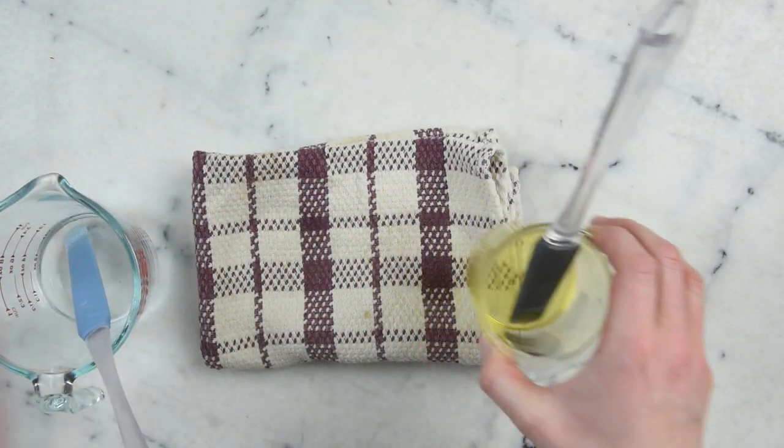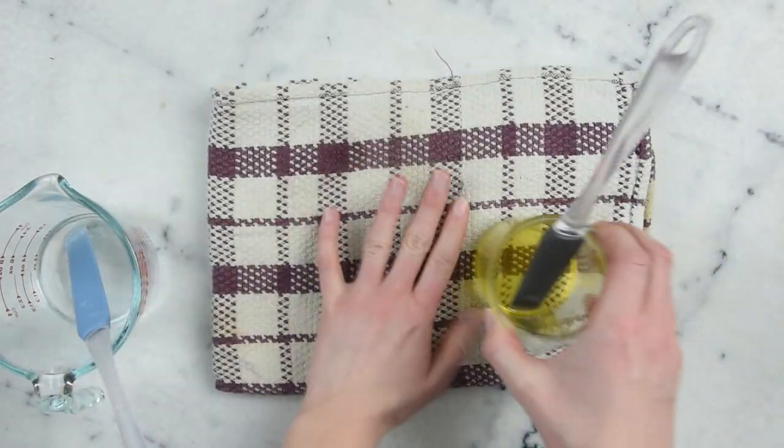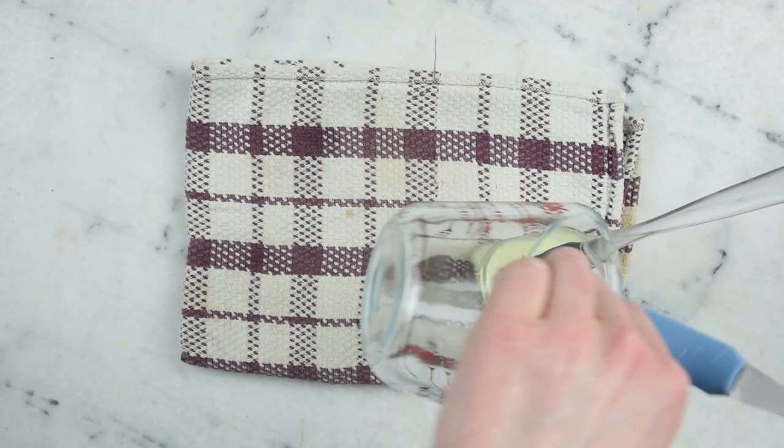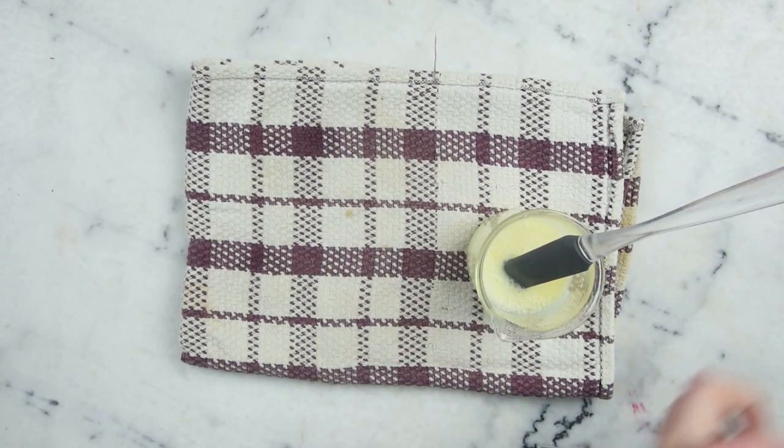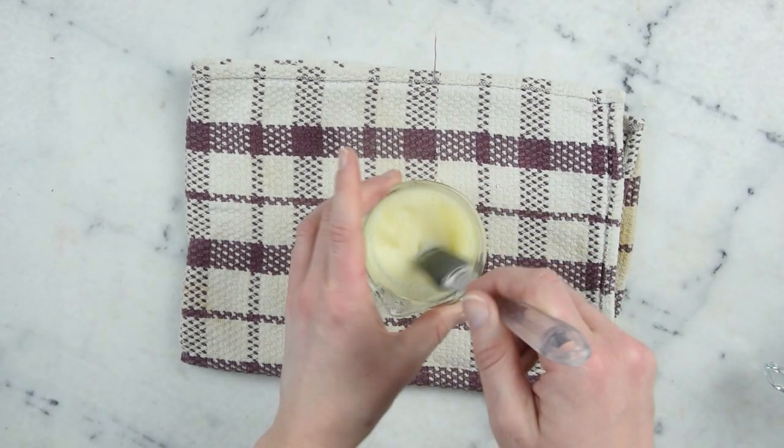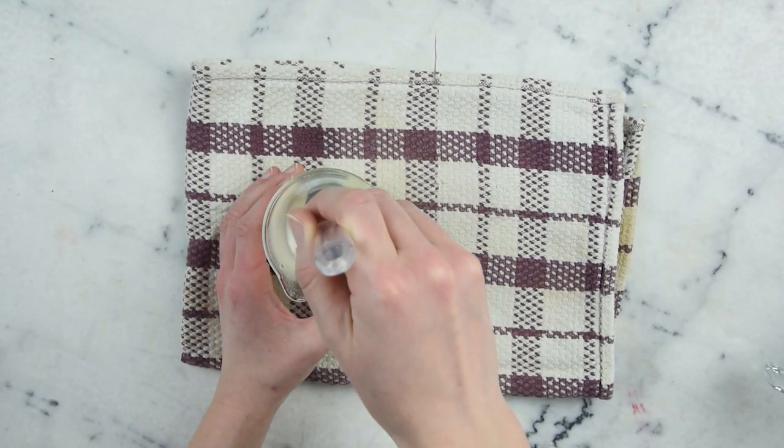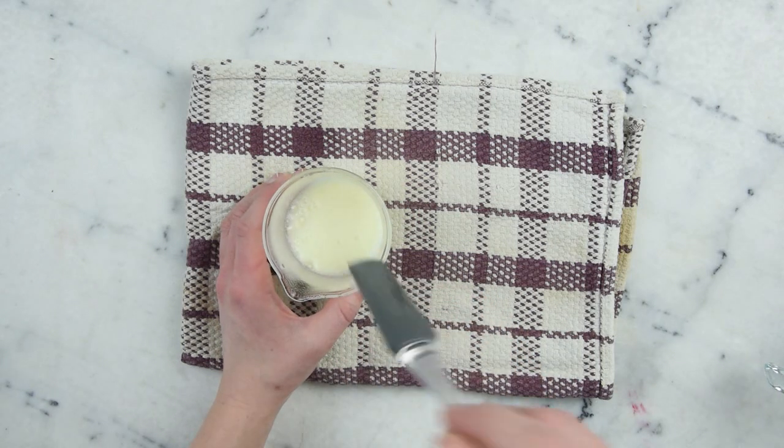So we are going to add our water part to our oil part here. And you can see that immediately starts to look a little creamy and milky as it starts to emulsify. So we have a quick little stir here. I can definitely smell the cocoa butter and it smells awesome.